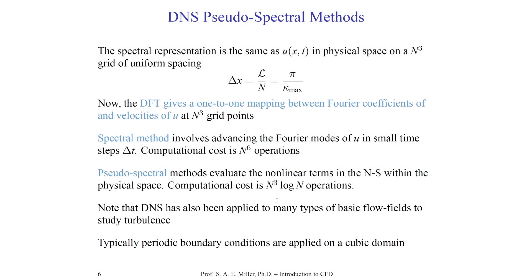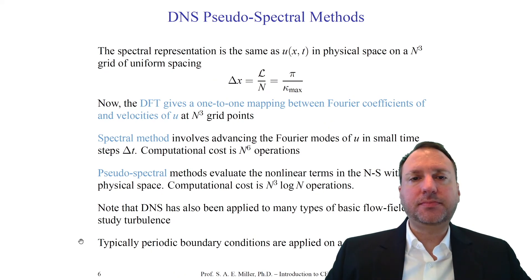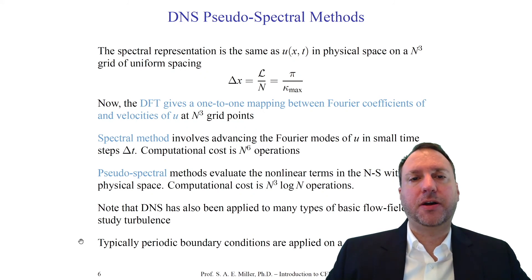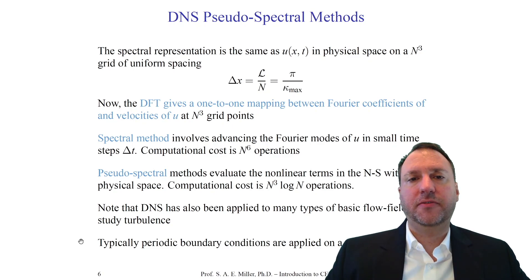DNS has been applied to many types of basic flow fields to study turbulence. Today it's mainly used to study flows with periodic boundary conditions applied on a cubic domain. With a cubic domain and periodic boundary conditions — meaning the flow can move through the sides — we would be modeling homogeneous isotropic turbulence extending in infinite space.